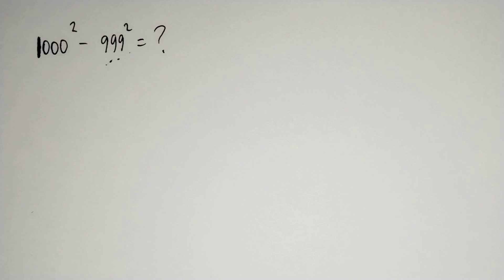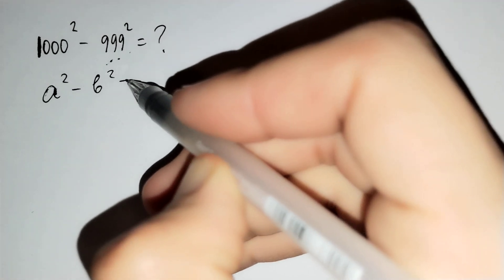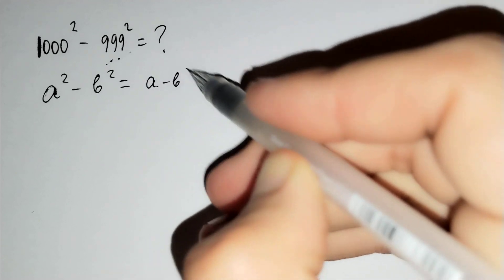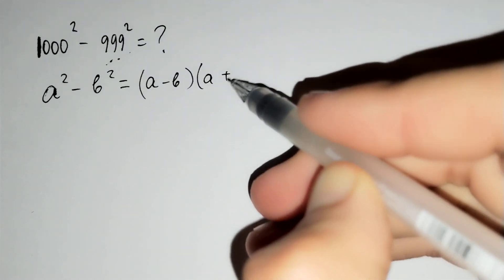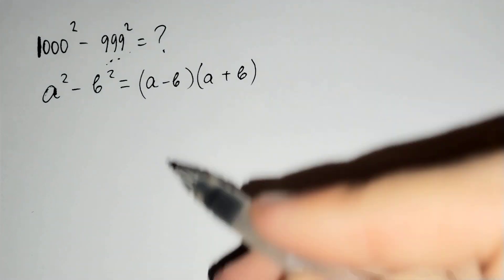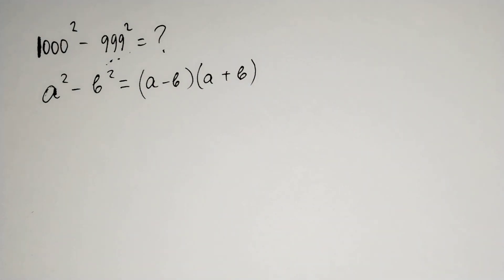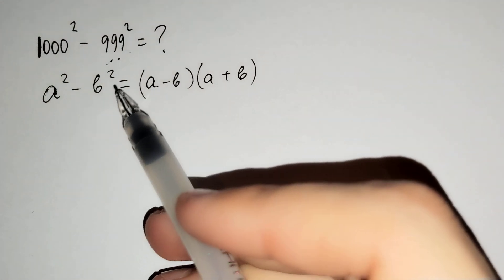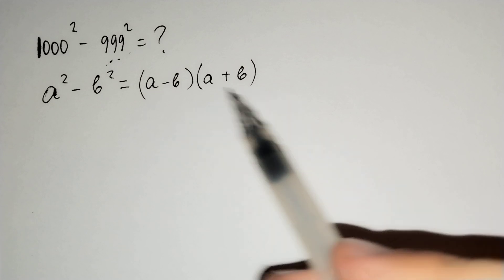First, I want to say that a squared minus b squared equals to a minus b times a plus b. This is the abbreviation for a squared minus b squared. For this formula,